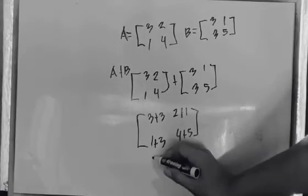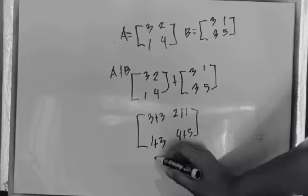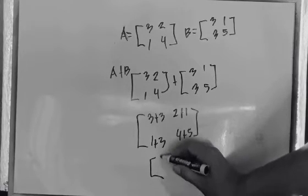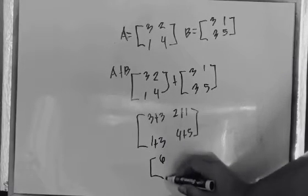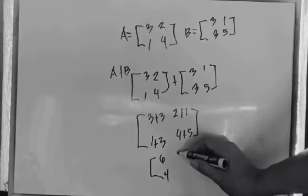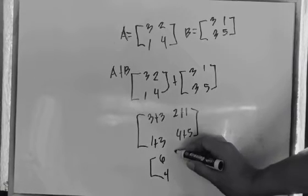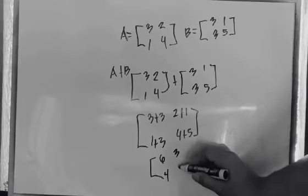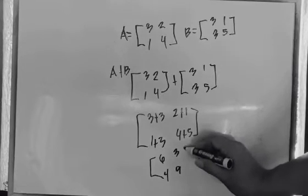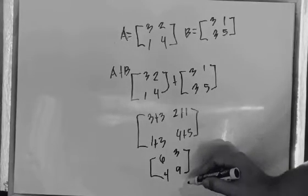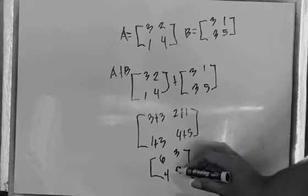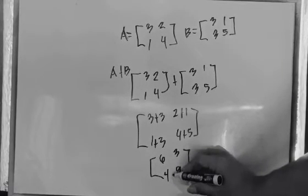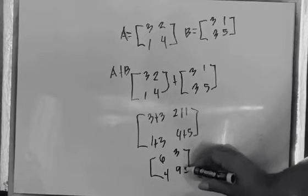So 3 plus 3 is equal to 6, then 1 plus 3 is equal to 4, 2 plus 1 is equal to 3, and 4 plus 5 is equal to 9. So the value of matrix A plus B is equal to [6, 4, 3, 9].